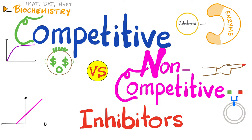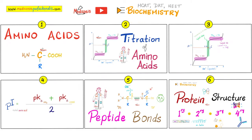Hey guys, it's Medicosis Perfectioneros, where medicine makes perfect sense. Let's resume our biochemistry playlist. In previous videos, we talked about the Michaelis-Menten plot, the Lineweaver-Burk plot, and we went over competitive inhibitors in one video and non-competitive inhibitors in another. Today, we shall compare between the two — competitive versus non-competitive. For this video to make sense, please watch the previous videos in order.